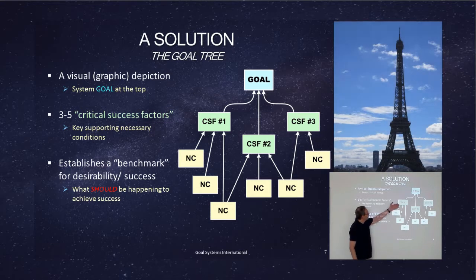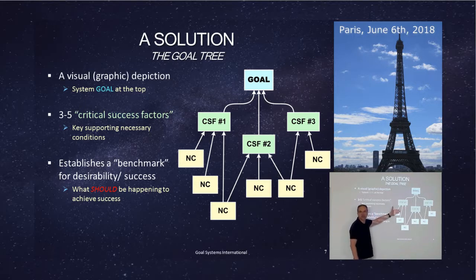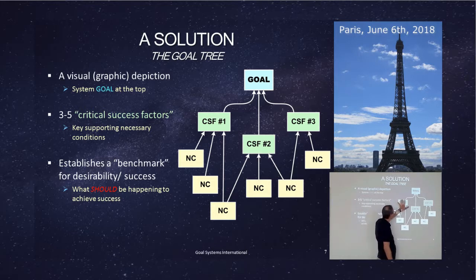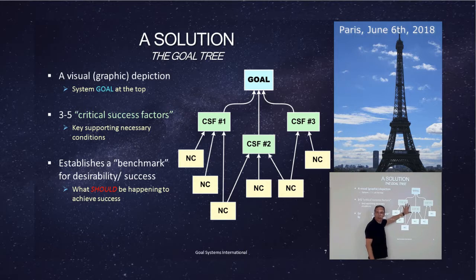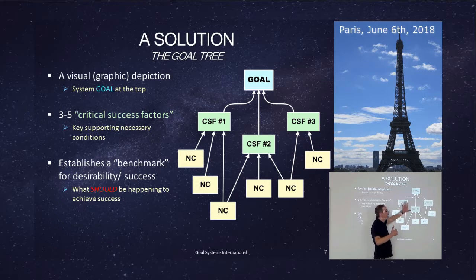Everything in the goal tree is related to the upper level by the relationship: in order to achieve this, I must have that. The necessary conditions are supporting the critical success factors, and the critical success factors are terminal outcomes just before reaching the goal. In essence, they are also necessary conditions — they just have a special status because they are the very last milestone before reaching the goal.